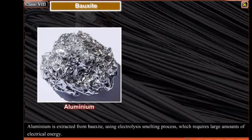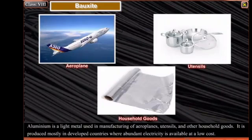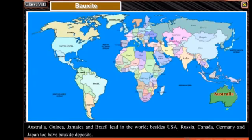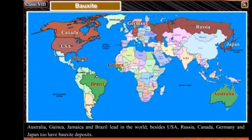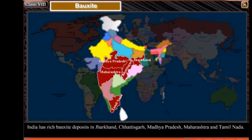Bauxite: Aluminium is extracted from bauxite using an electrolysis smelting process, which requires large amounts of electrical energy. Aluminium is a light metal used in manufacturing of aeroplanes, utensils, and other household goods. It is produced mostly in developed countries where abundant electricity is available at a low cost. Australia, Guinea, Jamaica, and Brazil lead the world; besides them, USA, Russia, Canada, Germany, and Japan also have bauxite deposits. India has rich bauxite deposits in Jharkhand, Chhattisgarh, Madhya Pradesh, Maharashtra, and Tamil Nadu.